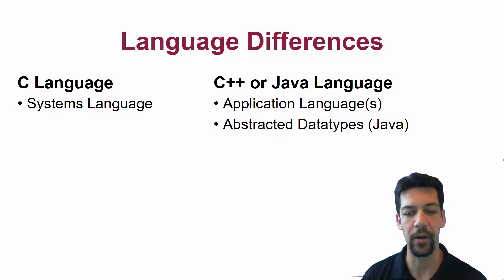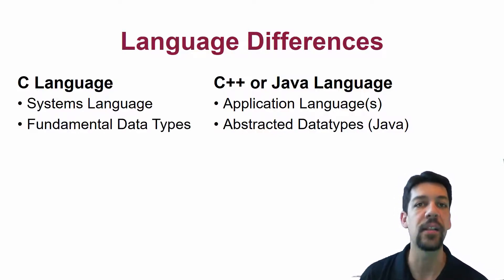Whereas in the C language, these data types are fundamental. A byte is a byte. An integer is always four bytes, things like that. And accessing these low-level pieces of memory, we access that memory directly in the C language. That gives us a lot of power, but it also makes our code a little bit more complicated.